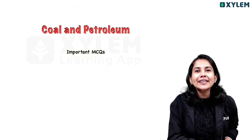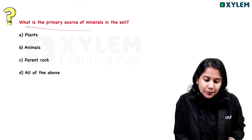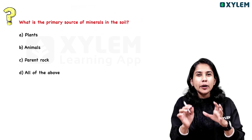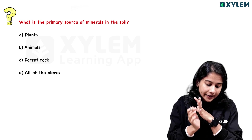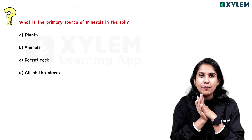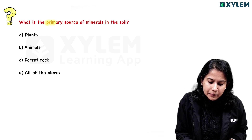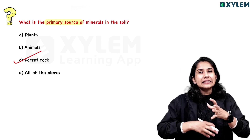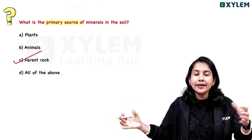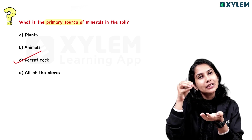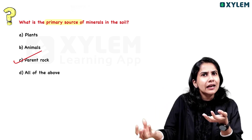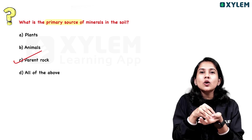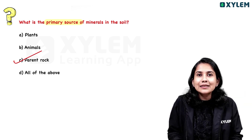What are the most technical questions? What is the primary source of minerals in the soil? The answer is parent rock. Parent rock is the source. Minerals come from the parent rock. So the primary source is the parent rock — we will mark that: soil minerals come from the parent rock.